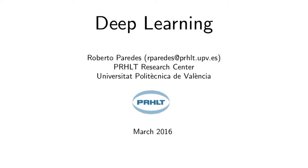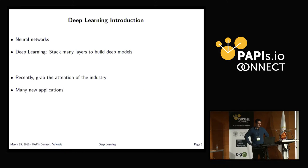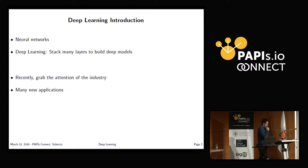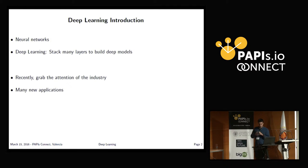Deep learning essentially refers to neural networks. Neural networks have been well known since the 1980s, so it's not anything new. Deep learning means that we are going to stack a lot of layers and build very deep models, very large models.